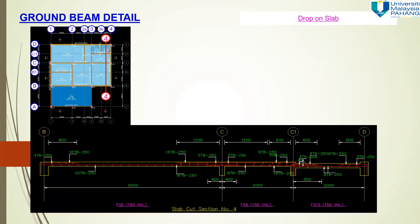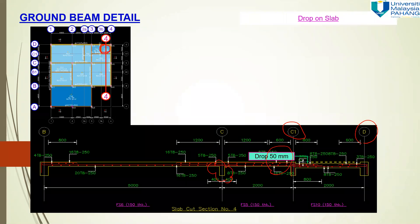For section 4-4, there is also a drop — from grid line C1 to D. The drop here is 50 mm, as you can refer to the ground beam layout for the value. The beam is available here, and the concrete thickness shall be 150 mm.